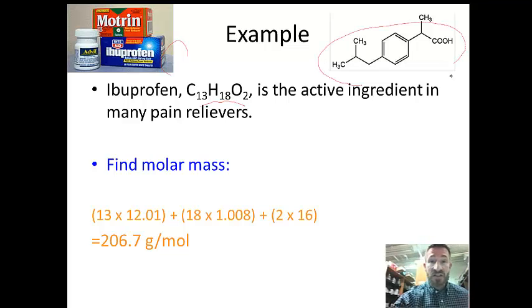This is a molecular structure. We'll learn how to draw the shapes of things later. Each bend is a carbon. If we look at this structure, there's 13 carbons, 18 hydrogens, and 2 oxygens. We'll learn how these structures work later.